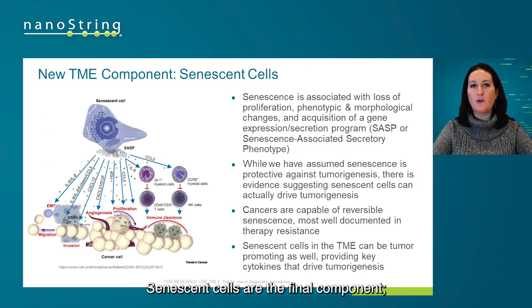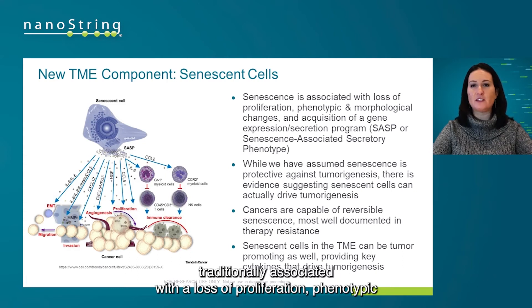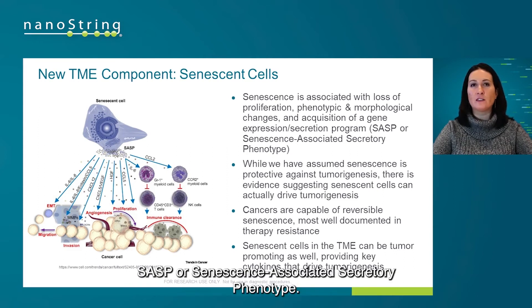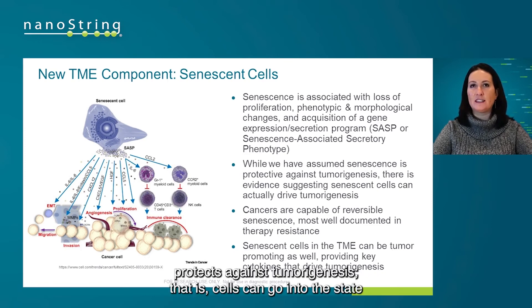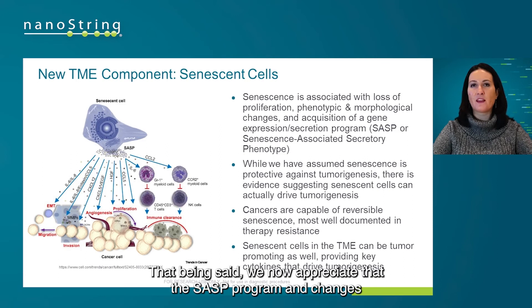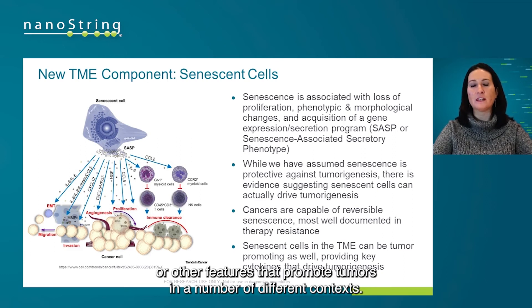Senescent cells are the final component, existing within the tumor microenvironment. Traditionally we've thought of senescence as a cell state associated with a loss of proliferation, phenotypic and morphological changes, and now the acquisition of a gene expression and secretory program we call SASP — or senescence-associated secretory phenotype. We've often thought of senescence as something that protects against tumorigenesis, as cells can enter a state of non-proliferation and prevent tumor formation. However, we now appreciate that the SASP program can actually drive tumorigenesis or other tumor-promoting features in a number of contexts.